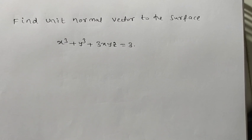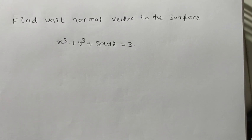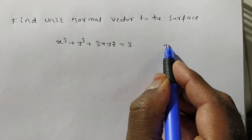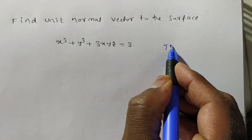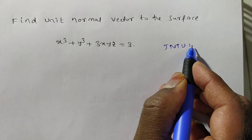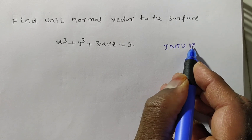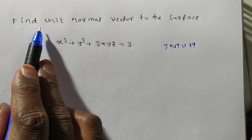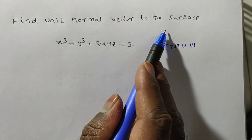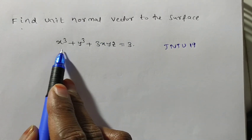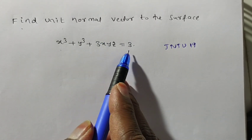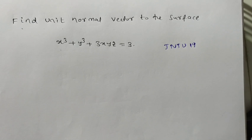Friends, now we are solving a problem on vector differential calculus. This problem came in JNTU Hyderabad in 2019. The given problem is: find the unit normal vector to the surface x³ + y³ + 3xyz = 3.